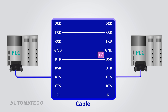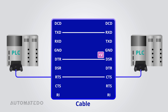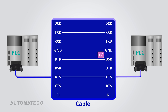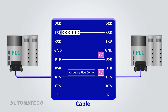Another issue arises when the transmitter operates at high speed — the receiver may fail to keep pace, leading to potential data loss. To address this, designers introduced an extra control wire to enable coordination between the transmitter and receiver during data transfer. This link is called Request to Send or RTS on the transmitter side and Clear to Send or CTS on the receiver side. It allows the receiver to signal when data transmission should pause or resume. This method is known as hardware flow control.